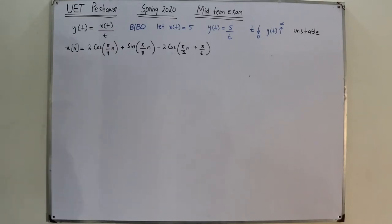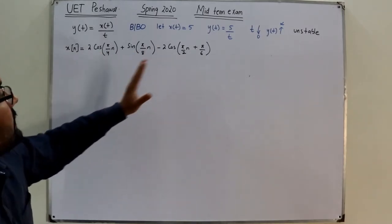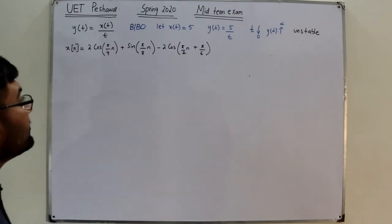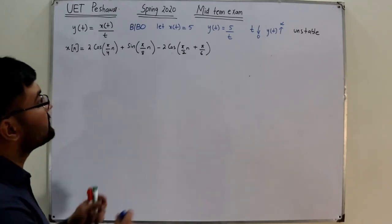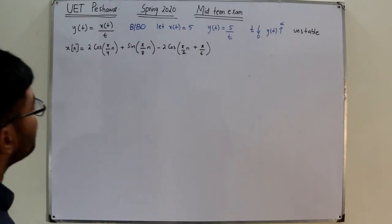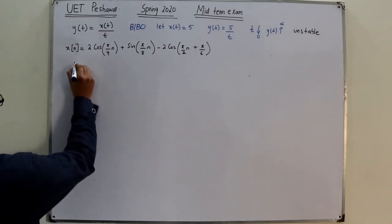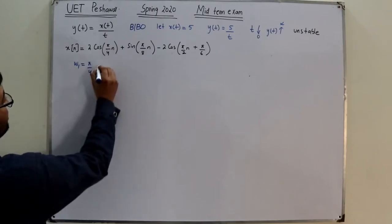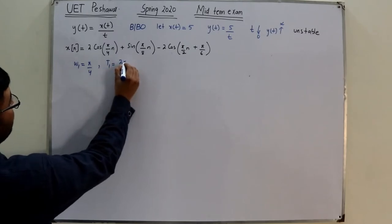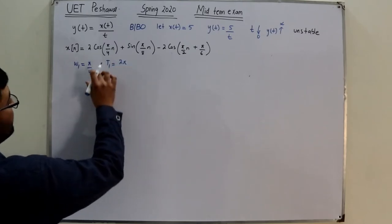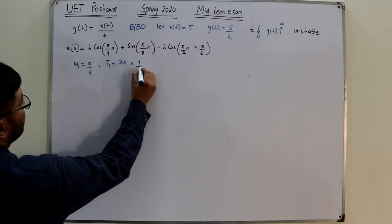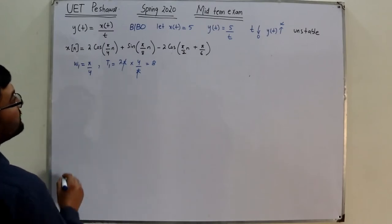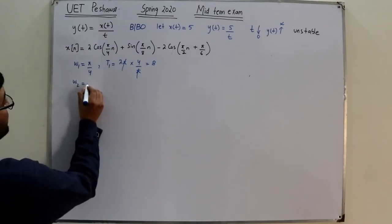This consists of a sum of three signals. We find each period individually. Omega-1 is π/4, so T1 = 2π/(π/4) = 8. Omega-2 is π/8, so T2 = 2π·(8/π) = 16.